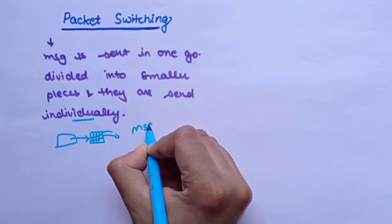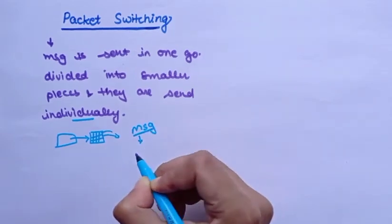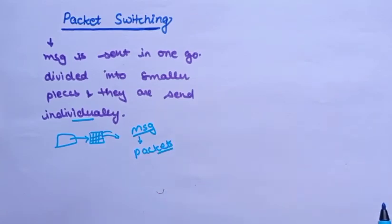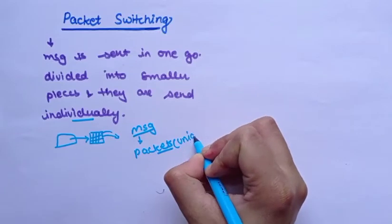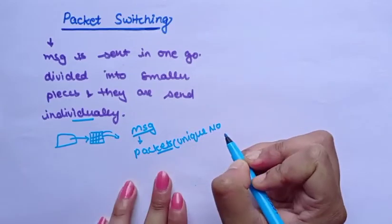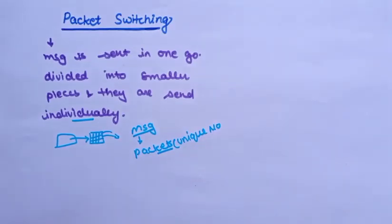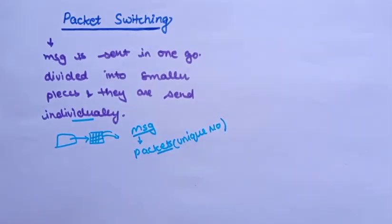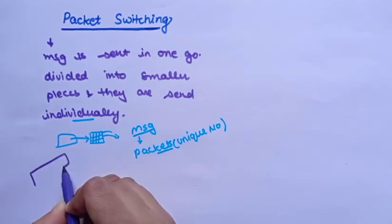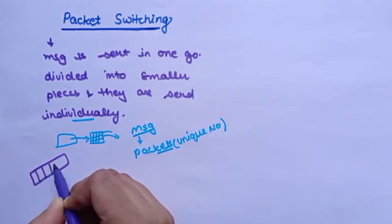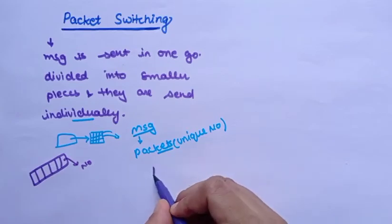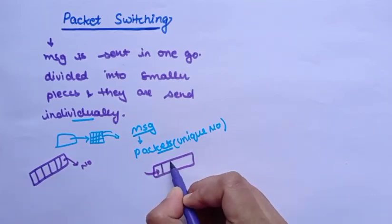The message is divided into sections and packets are given a unique number to identify their order at the receiving end. We have discussed this in the OSI model as well — the message is divided into packets and every packet is given a sequence number so that when they reach the destination side, they can be arranged in sequence.